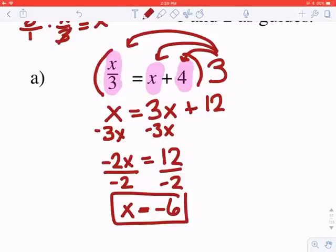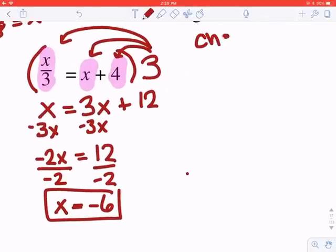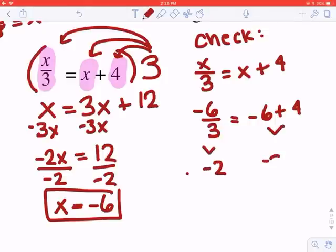The instructions on this page do say to verify your solution. When you're verifying with the check, you're not allowed to use the version of the equation that already has the fraction cleared. You have to go back to the original equation and substitute in that answer there. So I'm going to be checking that negative 6 divided by 3 has the same answer as negative 6 plus 4. Negative 6 divided by 3 is negative 2. Negative 6 plus 4 is negative 2. Those two equal each other, so it is correct.